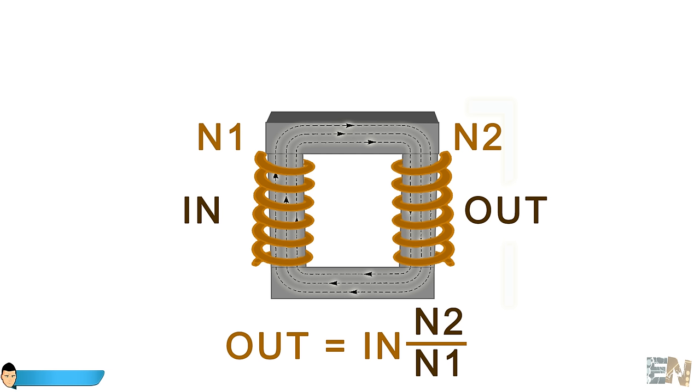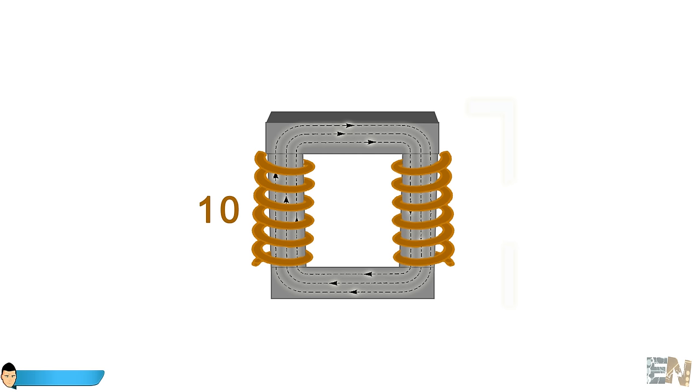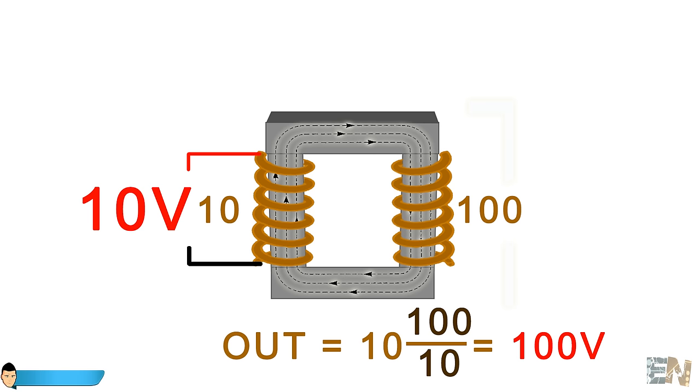So for example, if we have our primary coil with just 10 windings, and the secondary with 100 windings, and we apply 10 volts of AC voltage at the input, we will have 10 volts multiplied by the ratio between 100 and 10, which is 10. So we will have a total of 100 volts at the output.